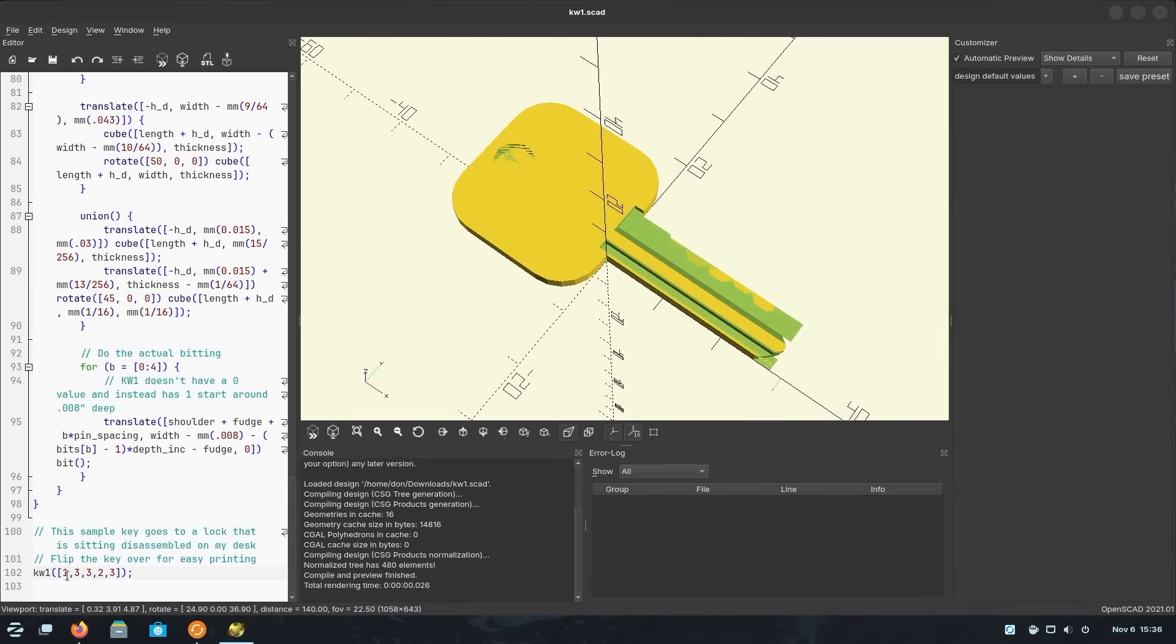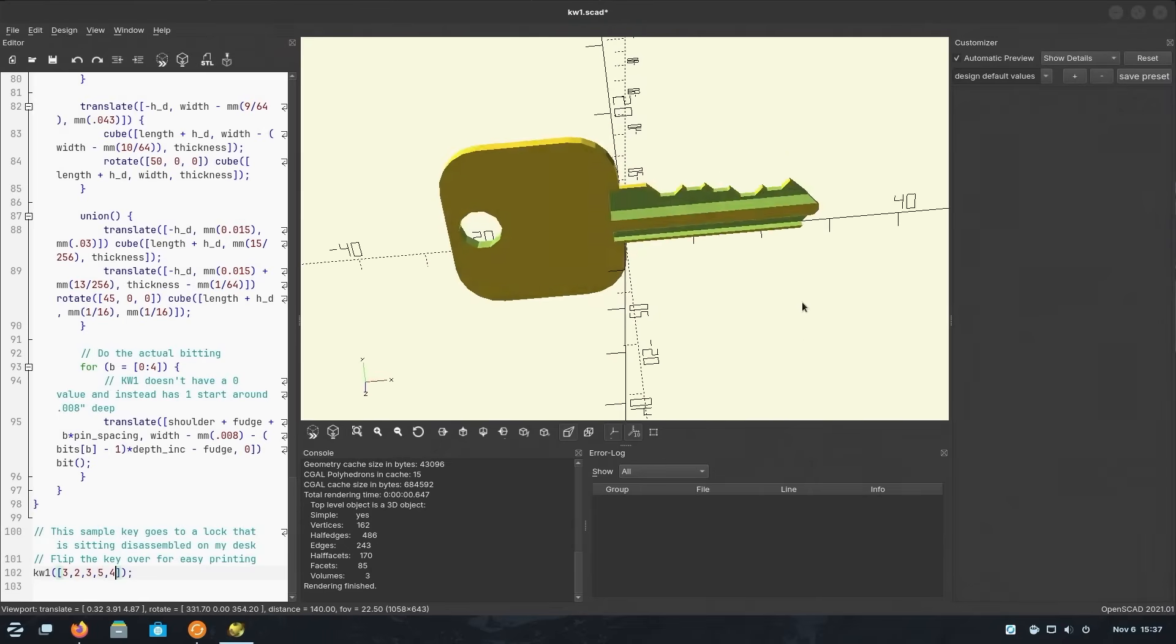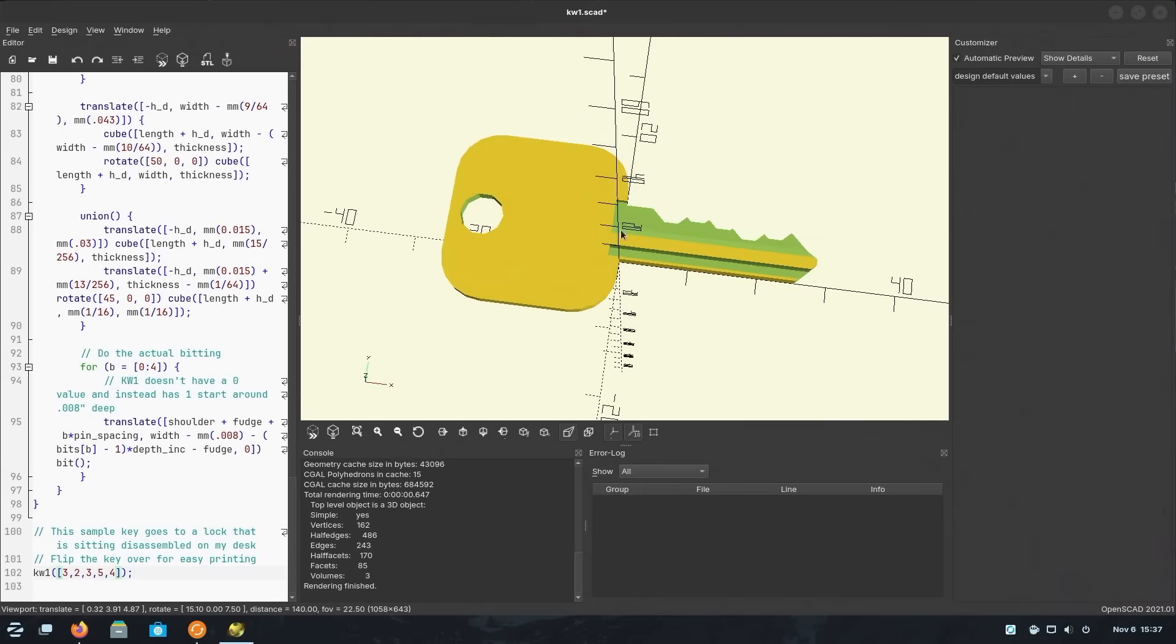Now, what we had originally was 3, 2, 3, 5, 4, and now if I render it, I'm going to see this right here. This is the exact key that I have.